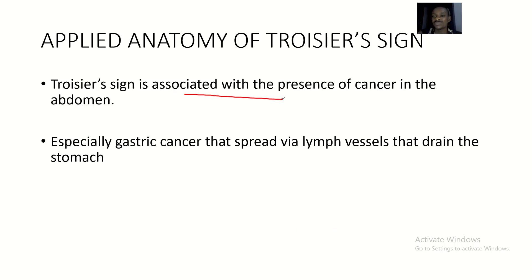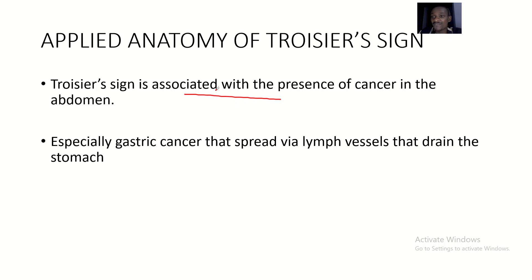The Troisier's sign is associated with the presence of cancer in the abdomen. Think of it like when you have an infection on your buttocks and instead of swelling only there, you also get swelling in the groin — that's the superficial group of medial inguinal lymph nodes. Similarly, because you have cancer in the abdomen, the lymph nodes that drain the abdomen become affected. The abdomen drains back into the thoracic duct and then into the supraclavicular lymph nodes, which swell as a result.